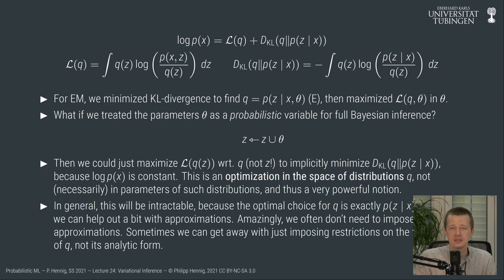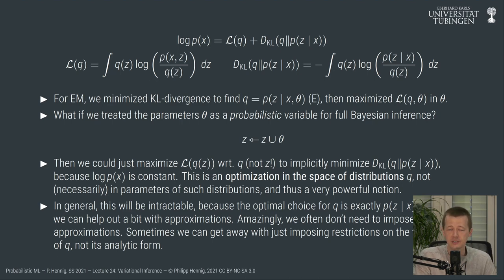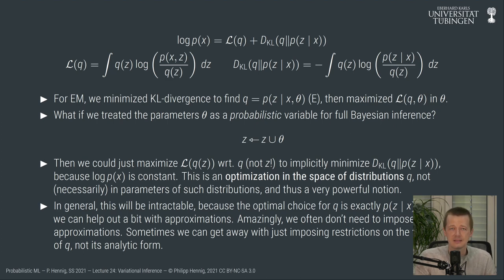One way to do this is to decide that q of z should be some parameterized probability distribution, for example a Gaussian. Then we can hope to write down the ELBO in closed form, and if we're lucky we can maximize it as a function of the parameters of the Gaussian. But we realized last lecture that we don't always have to immediately assume that q has a parametric form.